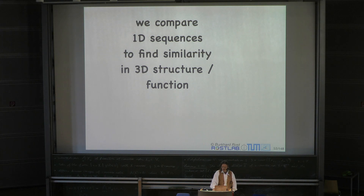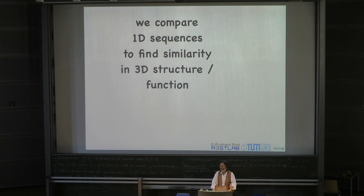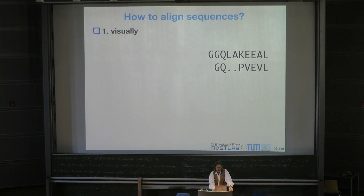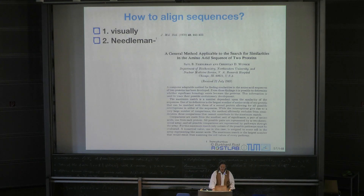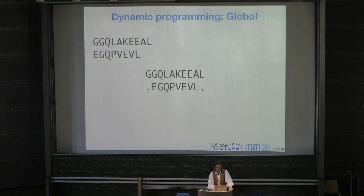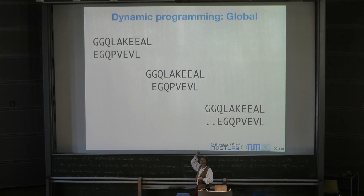We want to compare 1D structure to find 3D similarities—we compare 3D structures because we can, and if we could infer 3D similarities from 1D sequences, it's not only that we can but also much simpler, faster, and easier to do. The simplest way to do that is referred to as dynamic programming. Originally, this is the brute force approach. In a visual sense, you just move the string around until you've tried all possible combinations. It was published by Needleman-Wunsch in the 70s.